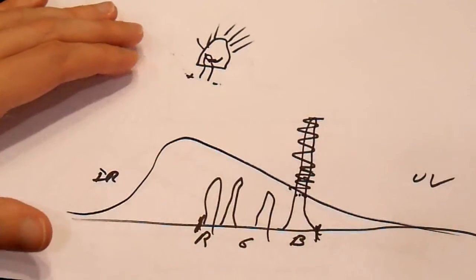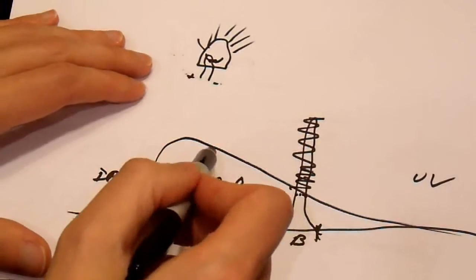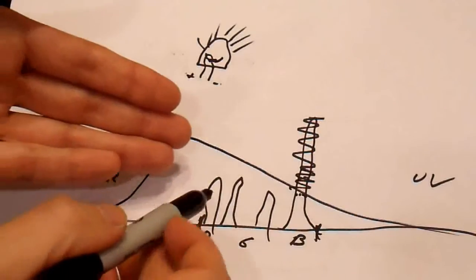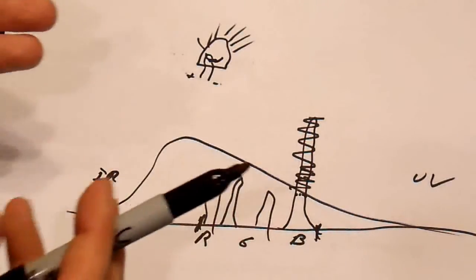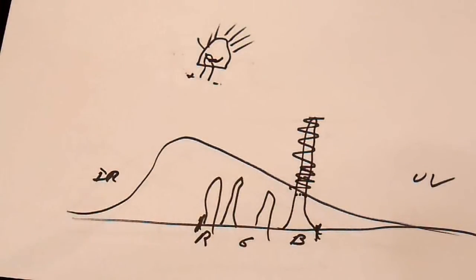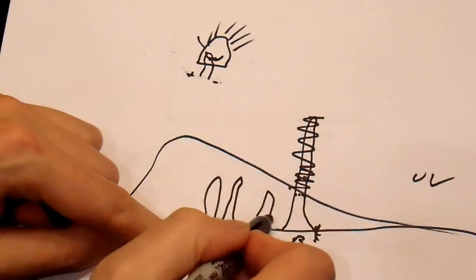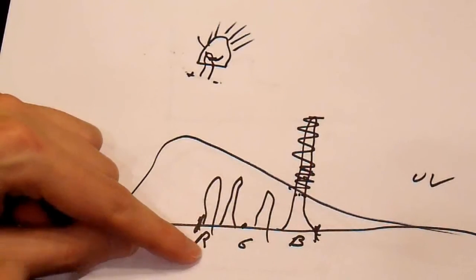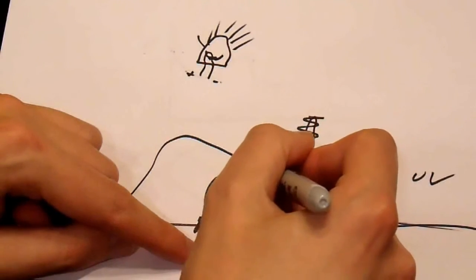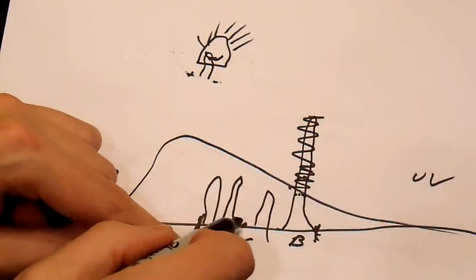It still will not have as high of a color rendering index, because what if you're looking at something that is this color? Well, there's no light at that color, so it won't look correct. But a black body radiator, sure, it has light at that level, so it will look correct.